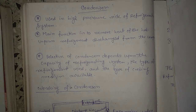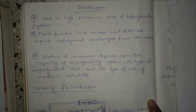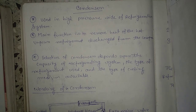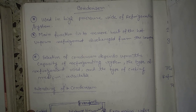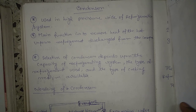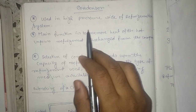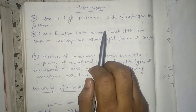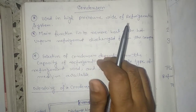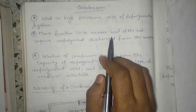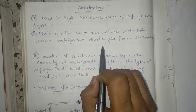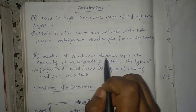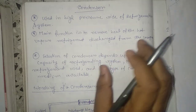Welcome back students. Today we will discuss condensers, which are basically a part of a refrigeration RAC system — specifically in the VCR system. In the VCR cycle, the four main components are: compressor, condenser, evaporator, and expansion valve or capillary tube.